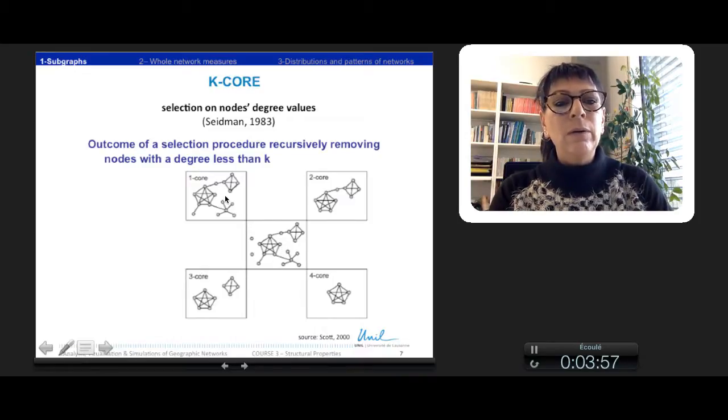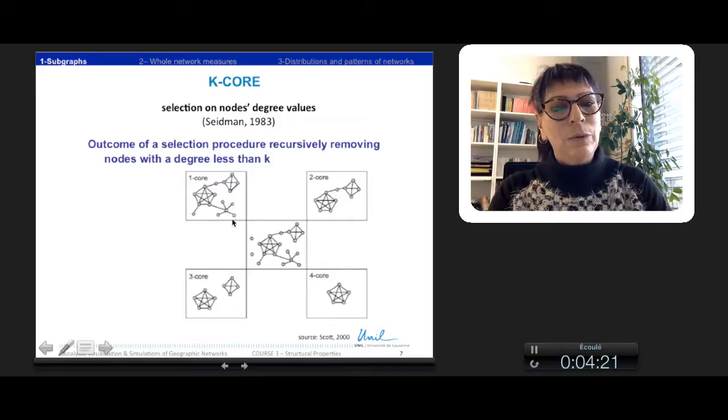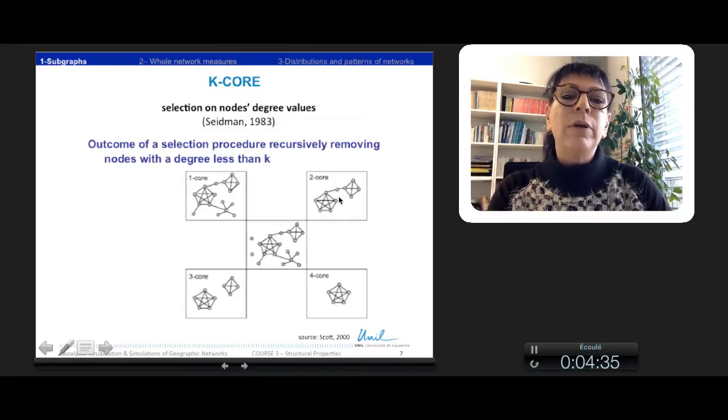If we define the one-core, all the nodes must have at least a degree of one. So we remove the two nodes here which have no connection. With the two-core, we relax again from this network with a degree of two. Here we remove all the nodes which have the degree of one. But this one, for example, if we remove the other one here, it remains with only a degree of one. So it is removed as well.